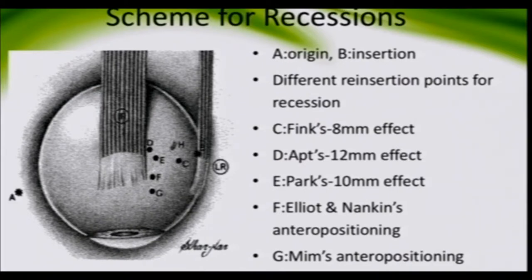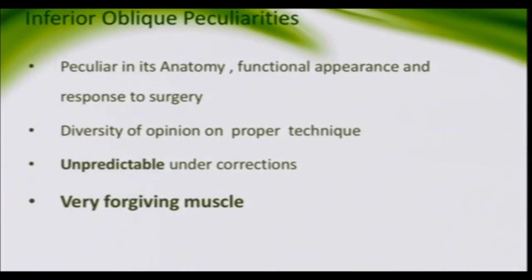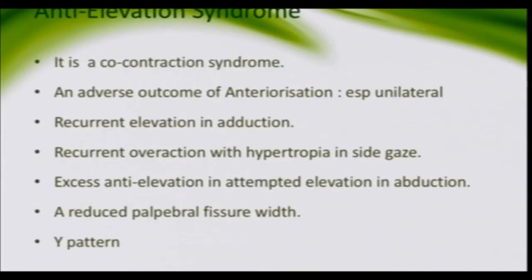This is the anteroposition (anteriorization), and this is MIMS center positioning, which is anterior to the inferior rectus insertion. The peculiarities of inferior oblique surgery are that there is always diversity in which technique to follow; there may be unpredictable undercorrections, but overall it is a quite forgiving muscle. One important point: whenever you do unilateral or bilateral anteriorization, there is a chance of anti-elevation syndrome. It is a co-contraction syndrome and an adverse outcome of anteriorization.